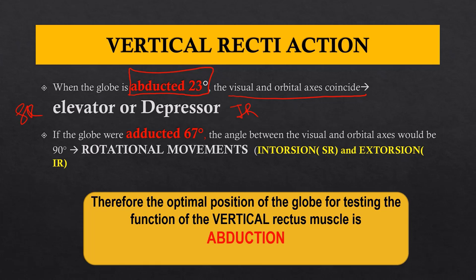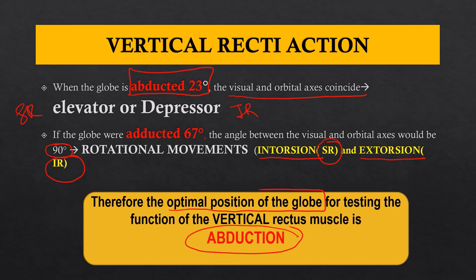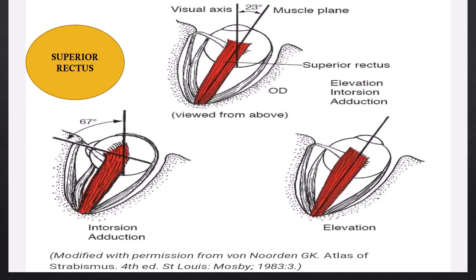If the globe adducts by 67 degrees, the angle between the visual and orbital axis becomes 90 degrees, and the movement becomes rotational — that is, intorsion and extorsion. Intorsion is caused by the superior rectus and extorsion by the inferior rectus. Therefore, the optimal position for testing the vertical recti is abduction, where the visual axis and muscle axis coincide and the muscles act as pure elevators or depressors.